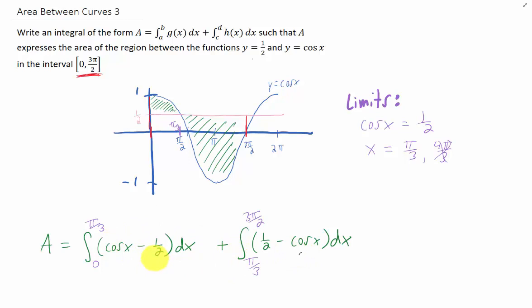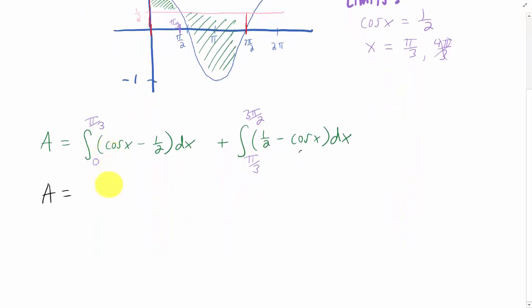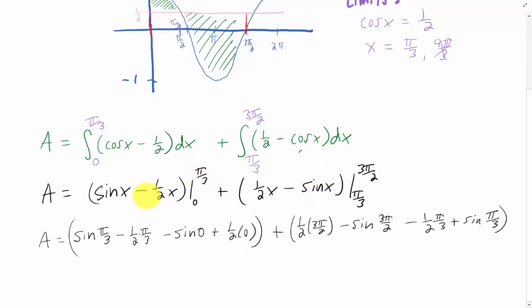This integral is what we were looking for. Of course, we should probably evaluate it. That's going to take a little bit of work, but let's run through it. Integral of cosine is sine. Integral of 1/2 is (1/2)x. The same is true on the second integral, and we can use our fundamental theorem to get the answer. Plugging in our upper limit of integration, then subtracting and plugging in our lower limit of integration on both of these integrals,